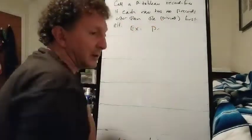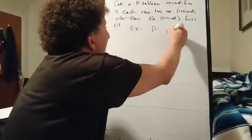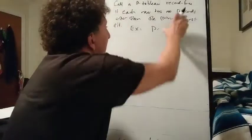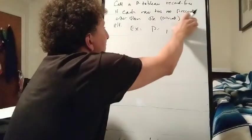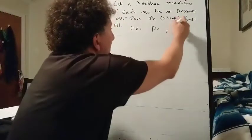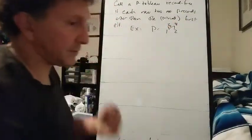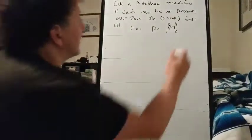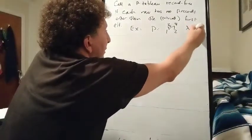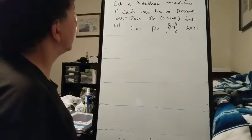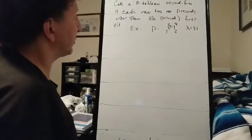For example, let's let p be this familiar poset. And let's let lambda be 3,1, so we'll look at record-free row semi-strict tableau of shape 3,1.